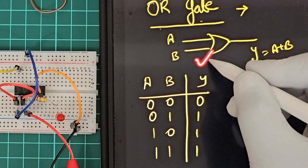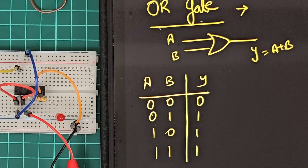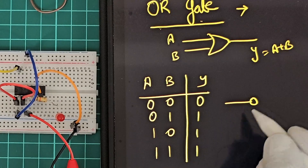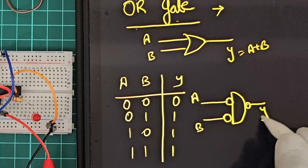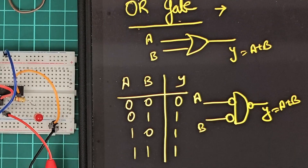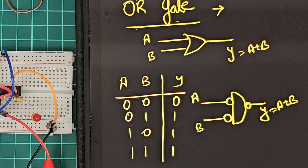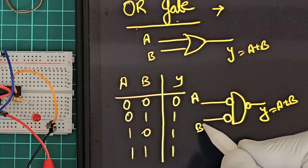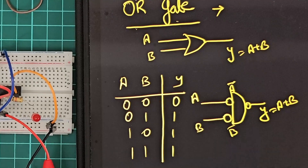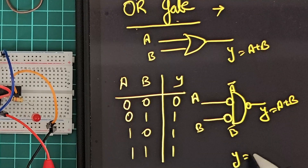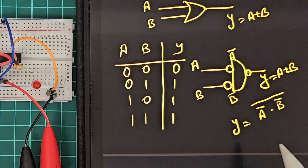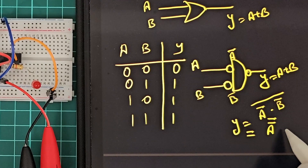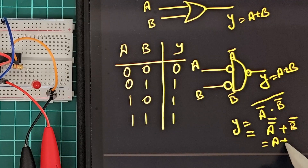Now we need to make this OR gate using a NAND gate. As per the bubble logic, if we put some bubbles in the NAND gate, then this circuit will act as an OR gate, where Y equals A plus B. The actual inputs become A bar and B bar, so Y equals A bar dot B bar, whole bar. If we use De Morgan's theorem, we can write A bar bar plus B bar bar, which gives us A plus B.